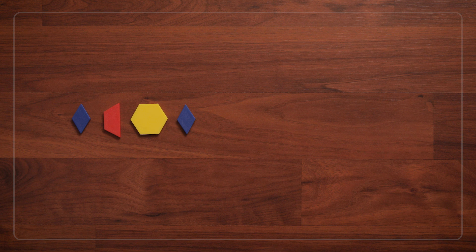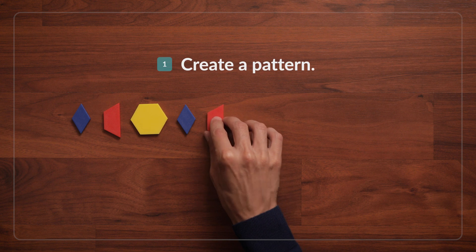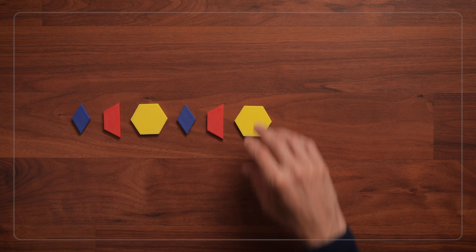To start, create a pattern with at least two repeating units. Here, my repeating unit is rhombus trapezoid hexagon.